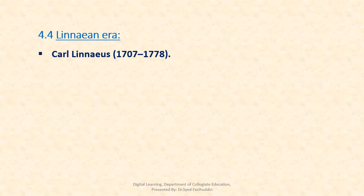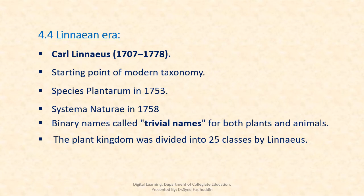The Linnaean era: Carolus Linnaeus marks the starting point of modern taxonomy. He published Species Plantarum in 1753 and Systema Naturae in 1758. For the first time he used binary names, called binomial names, both for plants as well as animals. He classified the plant kingdom under 25 classes.